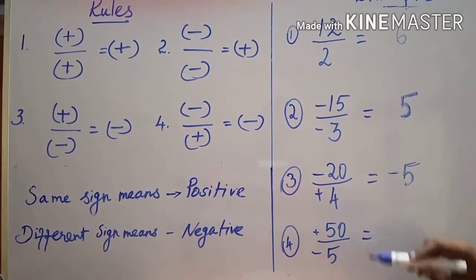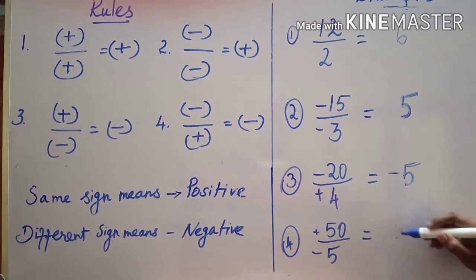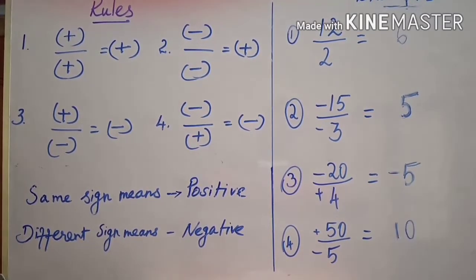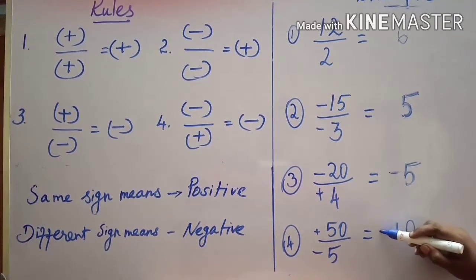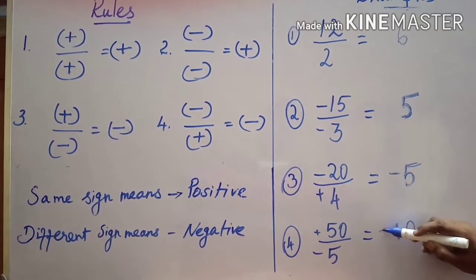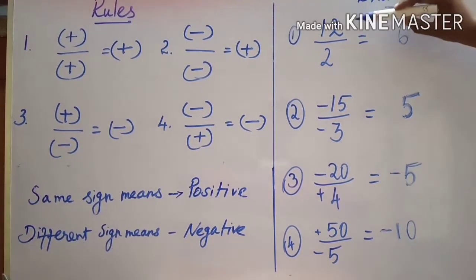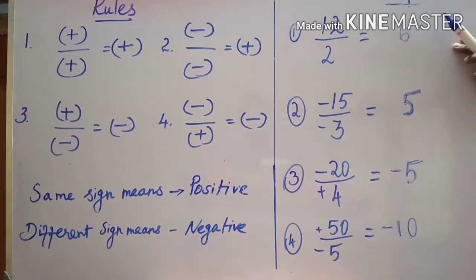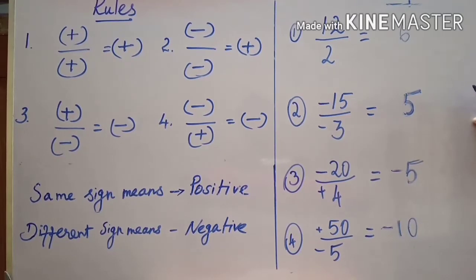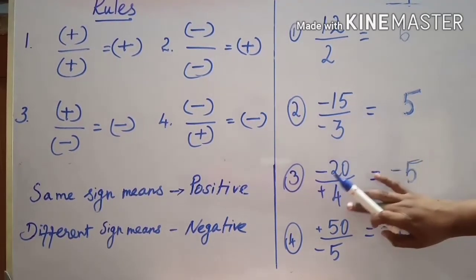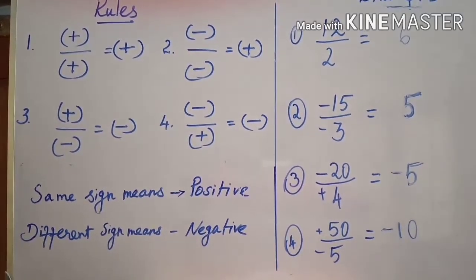Fourth sum: fifty divided by minus five. First find the value — fifty divided by five is ten. Look at the symbol: positive divided by negative — different sign means negative, so the answer is negative ten. To summarize division rules: positive divided by positive is positive; negative divided by negative is positive; negative divided by positive is negative; positive divided by negative is also negative.